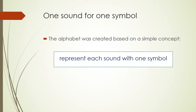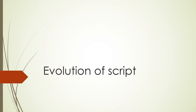The alphabet was created based on a simple concept: represent each sound with one symbol. Now let's see how this evolved.